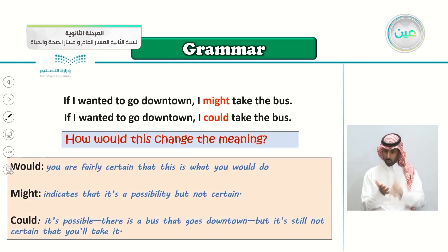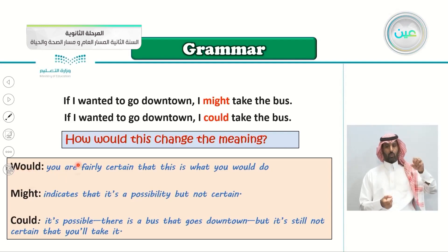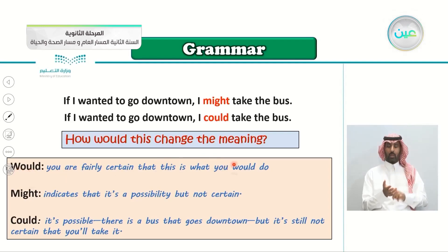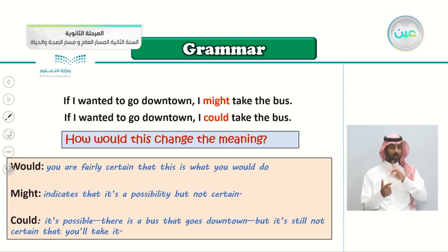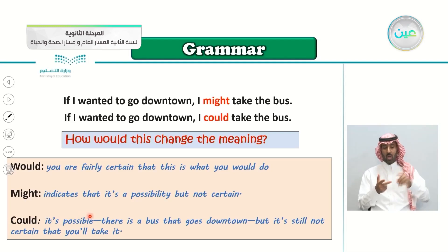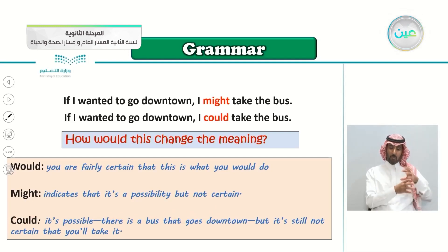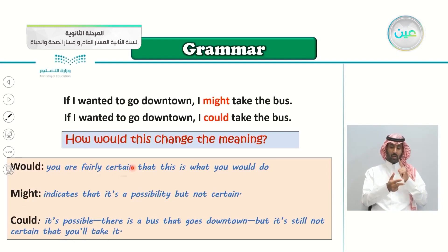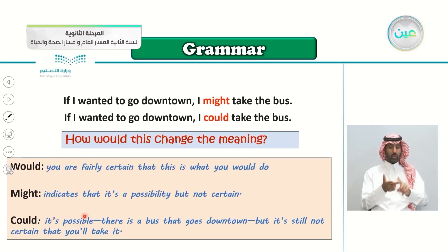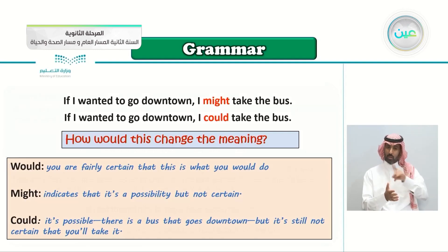If you use 'would,' you are 100% certain — this is what you would do. If you say 'might,' it indicates a possibility — maybe, but not certain. I might take the bus, maybe the taxi, I don't know. 'Could' means it's possible — there is a bus that goes downtown, but it's still not certain that you will take it.